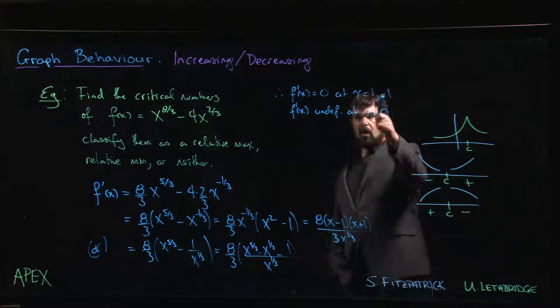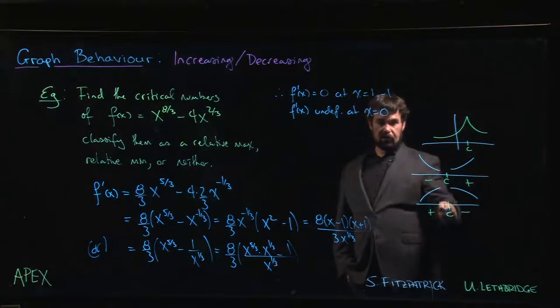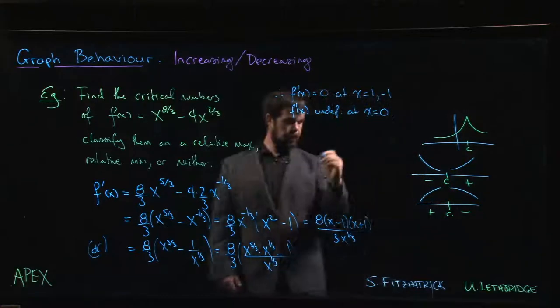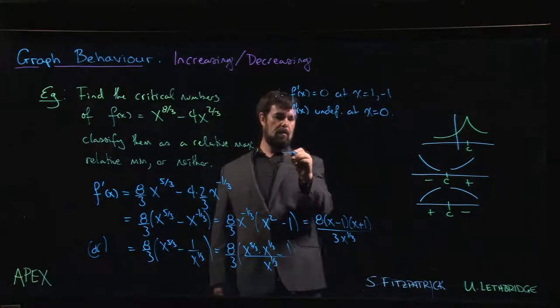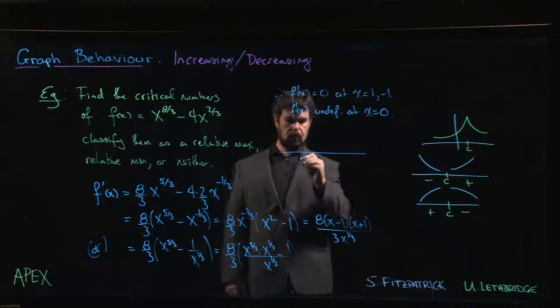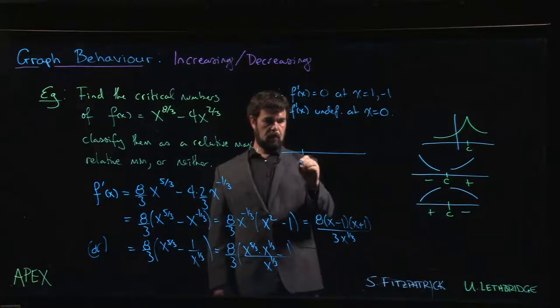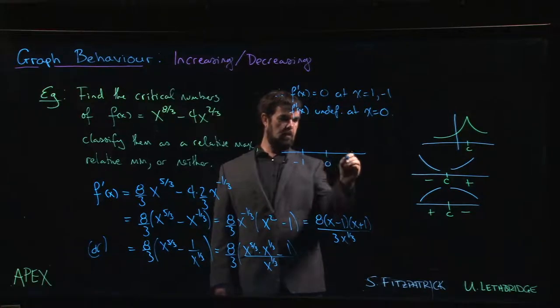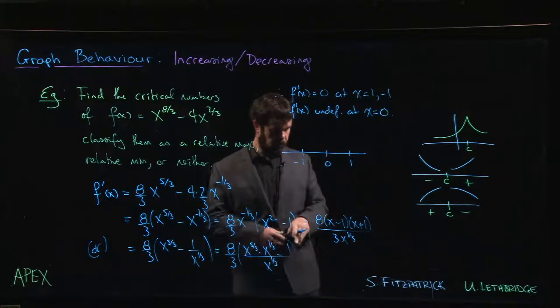Now that we've got our three critical numbers, we do this first derivative test analysis on each of them to see what we're dealing with. So we draw our number line and mark off our critical points: minus 1, 0, 1.